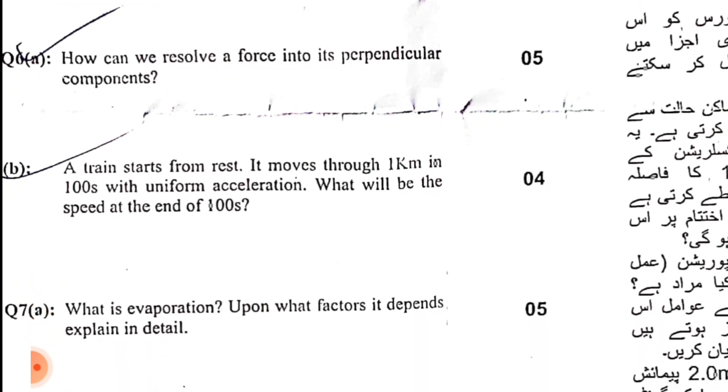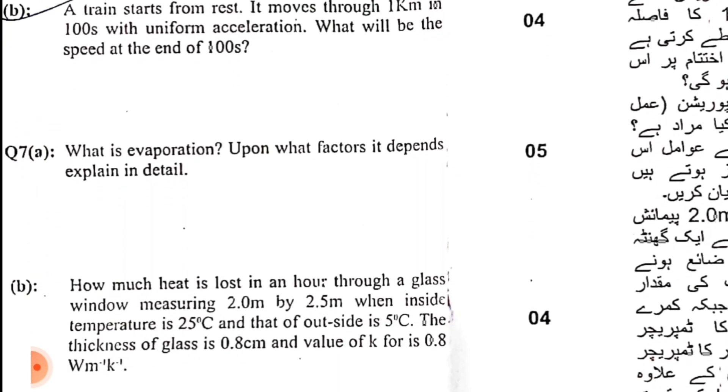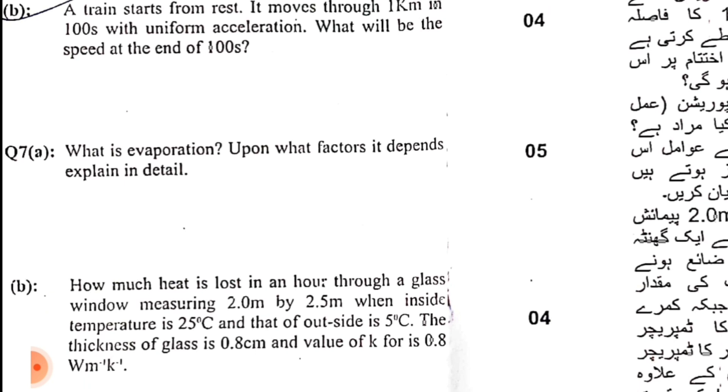A part is what is evaporation? Upon what factors it depends? Explain in details. Question number 7. B part is how much heat? This is numerical. You can also do this. I hope you will be able to do this. This paper will be good.